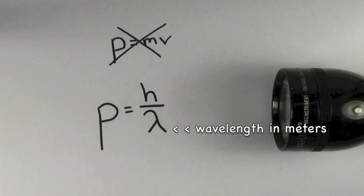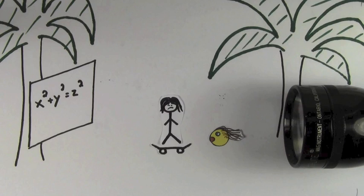Lambda is the wavelength of the light in meters. Be careful, don't use nanometers. You have to convert to meters. The momentum of a single photon is going to be extremely small. That's why it doesn't feel like we're getting pushed on very much when light shines on us.